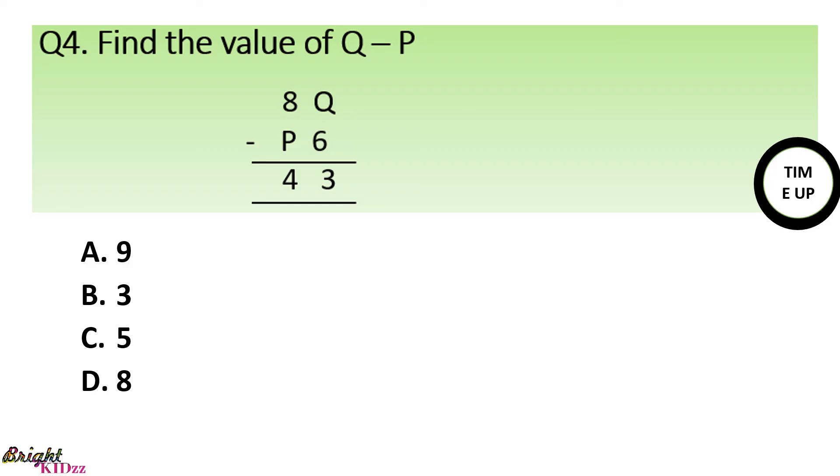So, here in this equation, first we need to find the value of Q and P. From what we subtract 6, we will get 3. So, Q here is 9. And 8 minus P should be equals to 4. So, this is 4. So, 9 minus 4. Q minus P has been asked. So, it is 9 minus 4 which is 5.